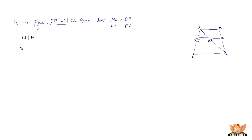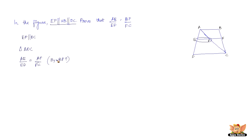Let's consider triangle ADC. Since we've established that EP is parallel to DC, by the basic proportionality theorem, we can say that AE by ED equals AP by PC. This is because a line parallel to one side of a triangle intersects the other two sides in a constant ratio.